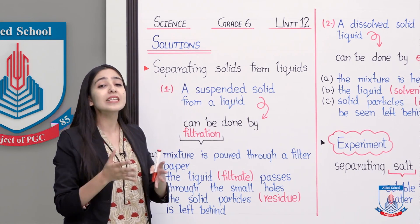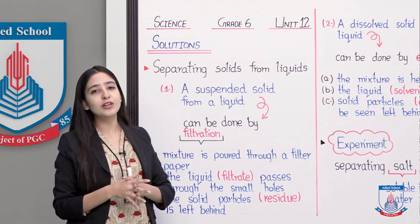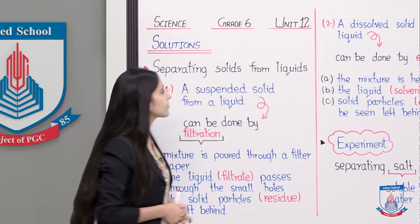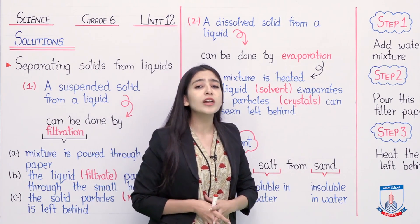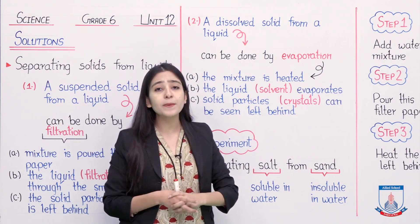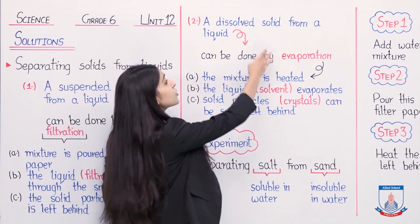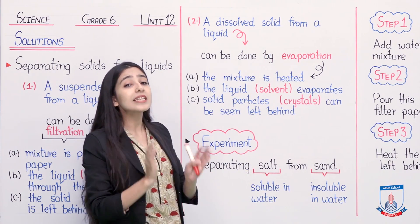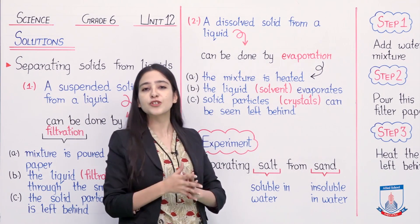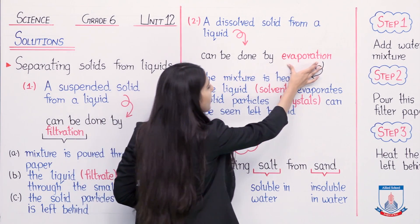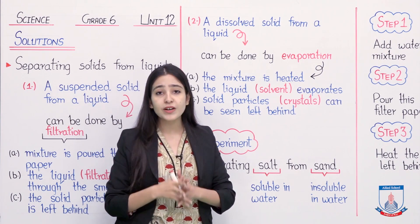We saw how in a suspension we separated solid and liquid. Now we will see how to separate a dissolved solid from a liquid. Our second point is: separating a dissolved solid from a liquid. If a solid is not dissolving in a liquid, separating it is easy — we simply filter it and the two things separate. But here the solid particles are completely dissolved inside the liquid, forming a solution, making separation harder compared to a suspension. This can be done by evaporation.